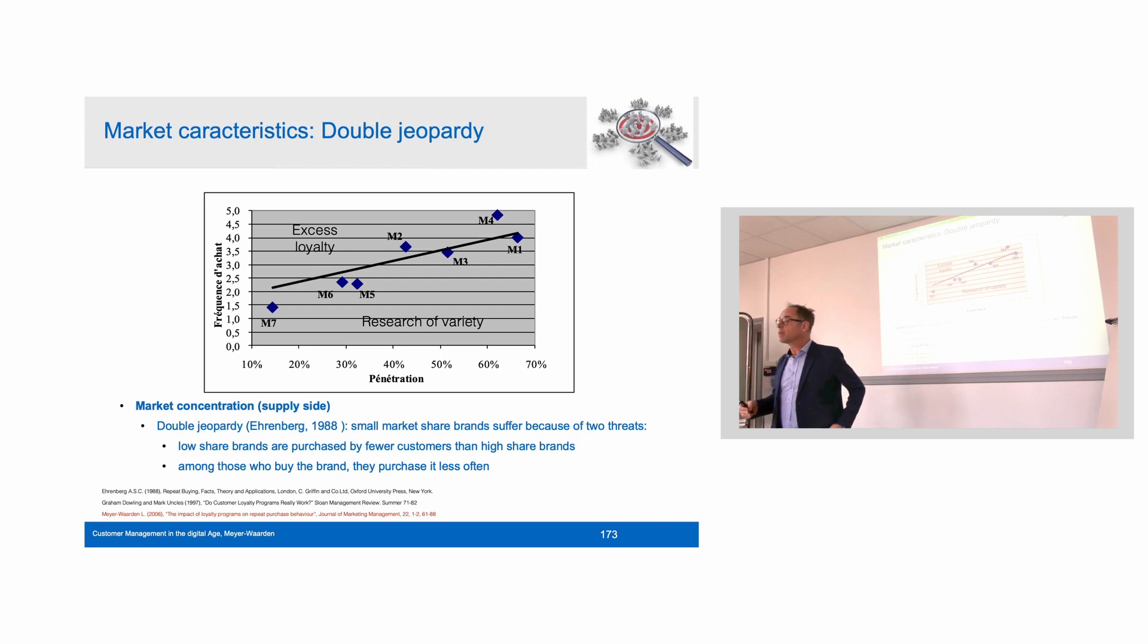So it's a bad strategy to say, I'm a small actor, I will imitate the big actors, because these actors were the last ones who launched their loyalty programs. They did it through imitation. So imitation is a bad strategy. The efficiency is below the norm. So it's a bad idea to say I will imitate the big actors, because the programs will be less efficient. All marketing actions will be less efficient.